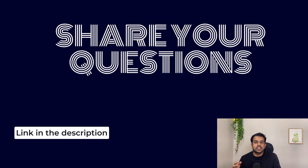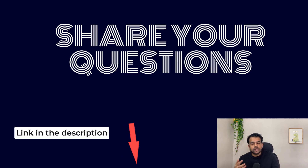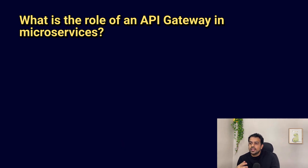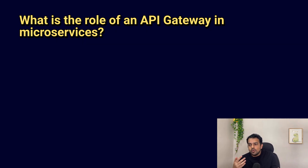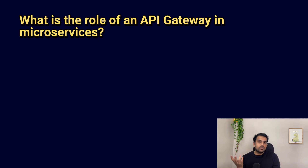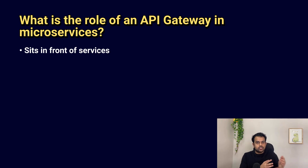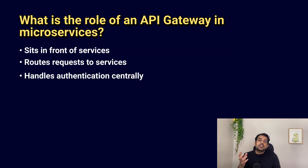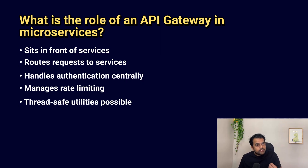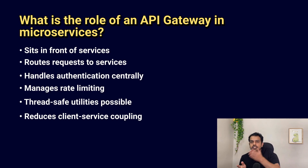Quick reminder: if you've faced any interviews recently, please share your questions using the form in the description. The next question is: what is the role of an API gateway in microservices? An API gateway sits in front of all microservices — it routes incoming requests to the correct service and handles cross-cutting concerns like authentication, rate limiting, and logging. It also reduces direct communication between the client and services, making the architecture cleaner and easier to maintain.